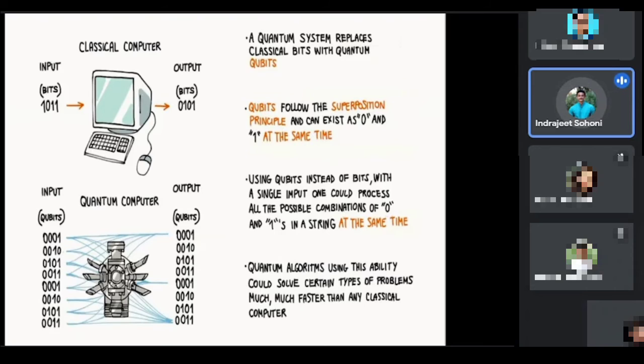This is just a revision of what we saw. A classical computer uses bits—zero, one, zero, arranged and encoded as needed. Compared to a quantum computer that uses qubits, qubits follow the superposition principle. Quantum computer algorithms using this ability could solve certain types of problems much, much faster.